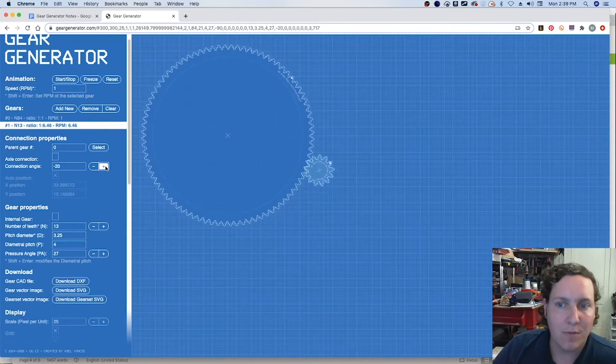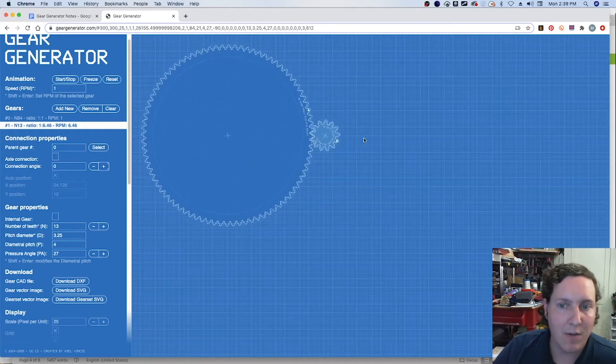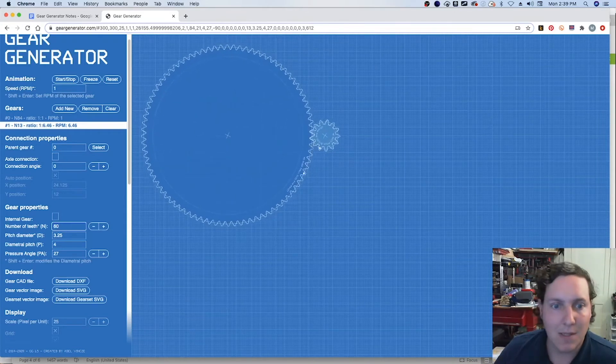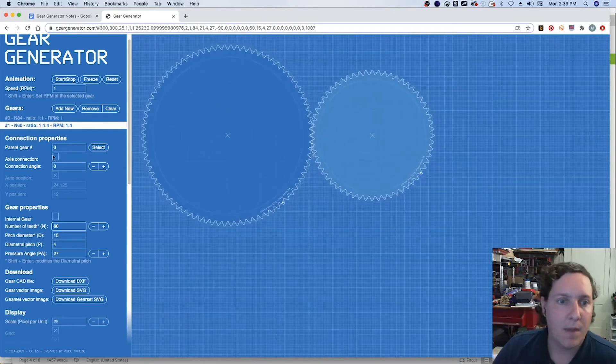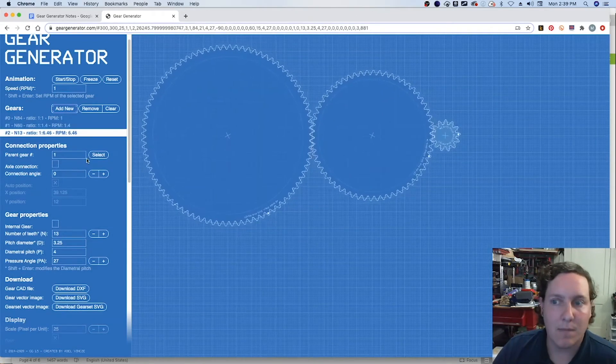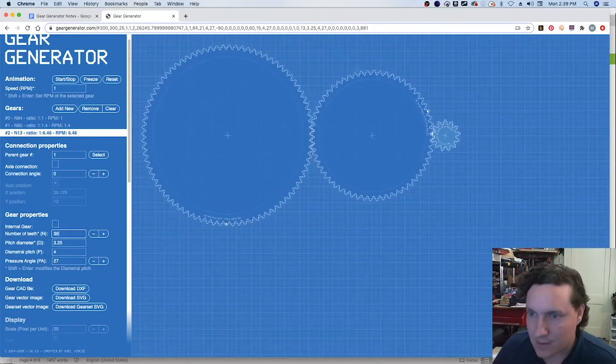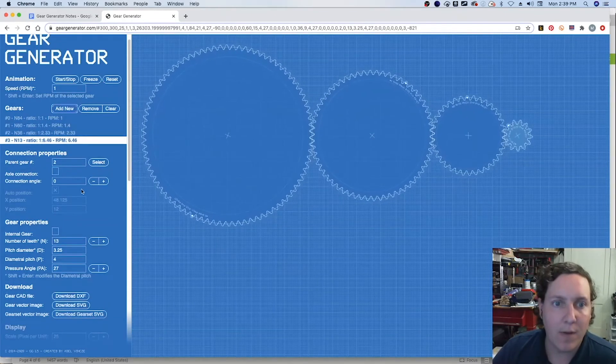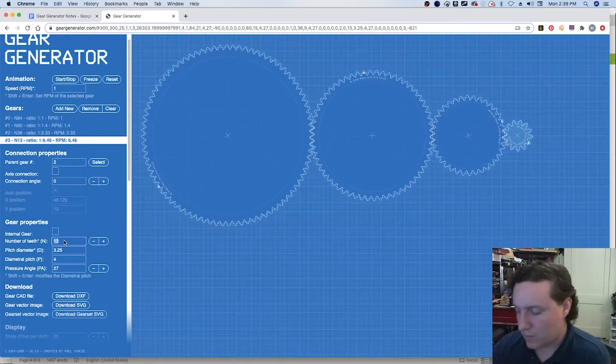Now just to make it a little easier and following more of the drawing, setting the connection angle to zero, we're going to tell it this one has 60 teeth. Another one, it's kind of picking up the pattern, this one had 36 teeth, and then a final one adding in 12 teeth.